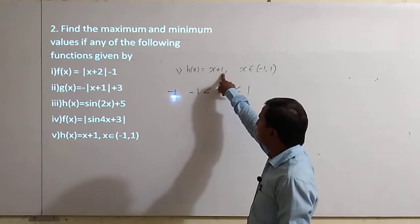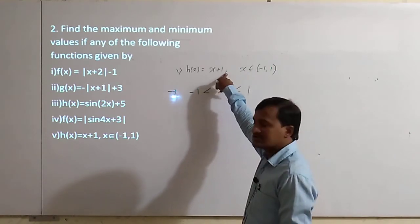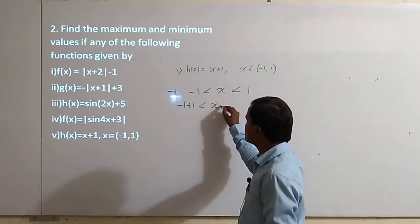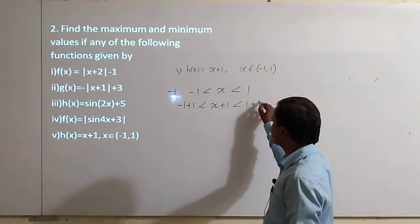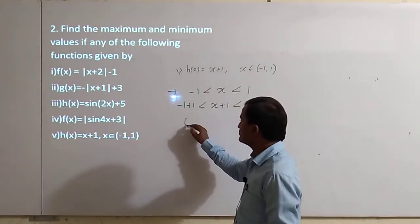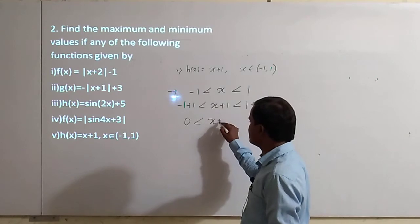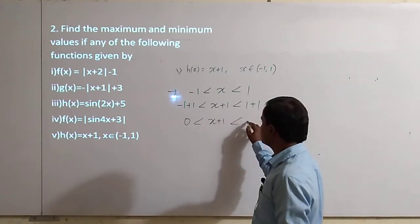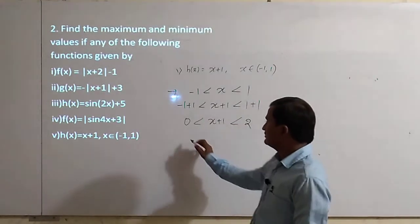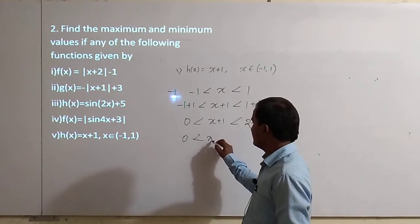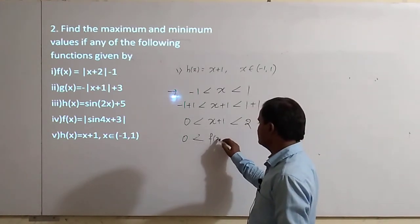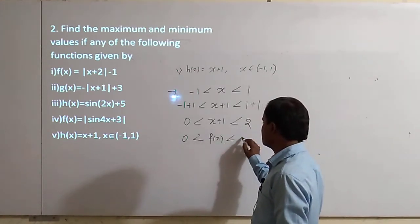Now, what is the functional value x plus 1? We write x plus 1 which is less than 1 plus 1. So, 0 is less than or equal to x plus 1 which is less than or equal to 2. Therefore, 0 is less than f of x and f of x is less than 2.